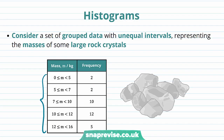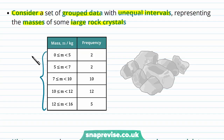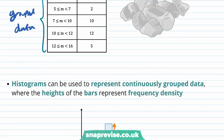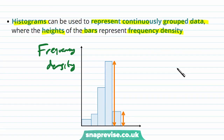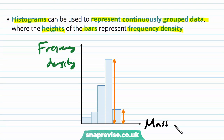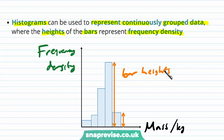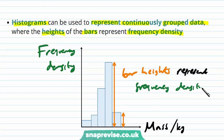So what exactly are histograms? Consider a set of grouped data with unequal intervals representing the masses of some large rock crystals. Histograms can be used to represent continuously grouped data, where the height of the bars represents frequency density. So we plot frequency density against the mass in kilograms of the rocks, and each bar height represents frequency density.